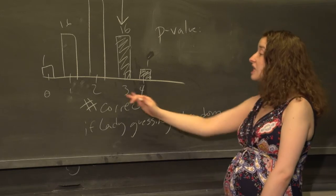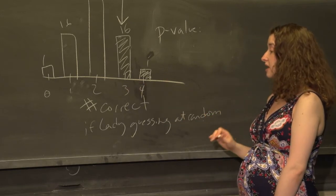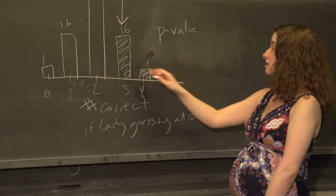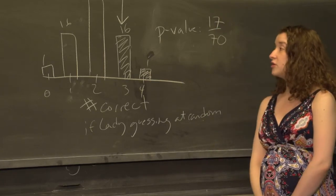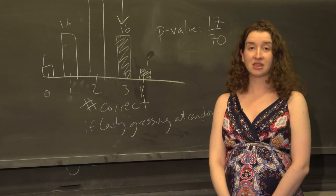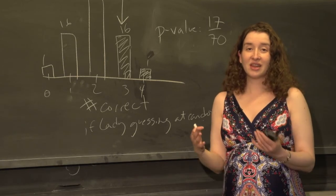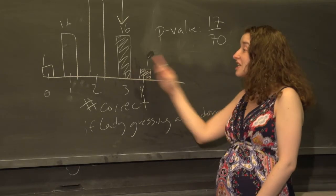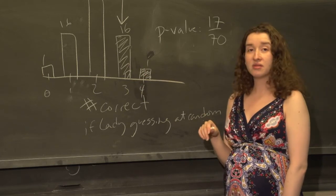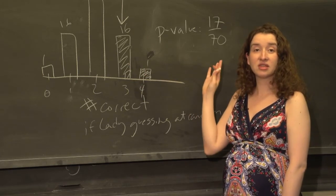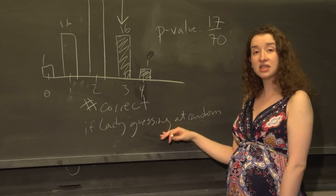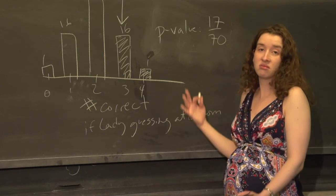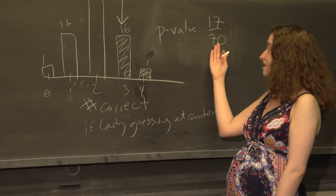Here the probability that the lady chooses at least three cups correctly if she's guessing at random is 16 plus 1, it's 17 over 70. Do you find that surprising? It's up to you. If we say to you this event that she gets at least three right would only happen 17 out of 70 trials if she were guessing at random, does that provide evidence against the assumption she was guessing at random? Only if you think this is a small number.